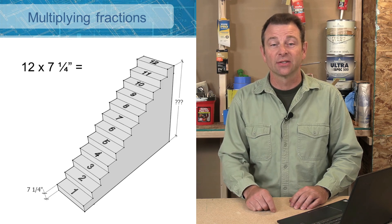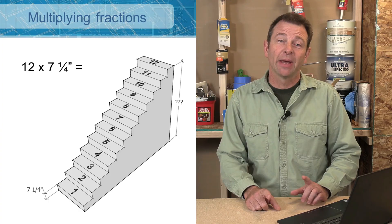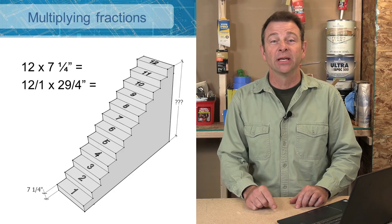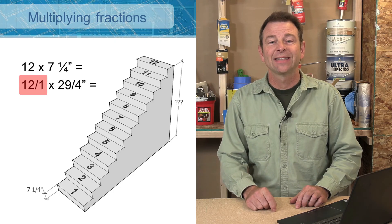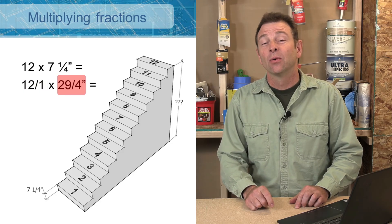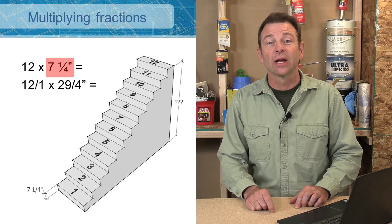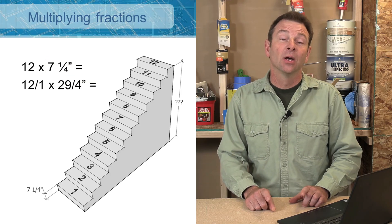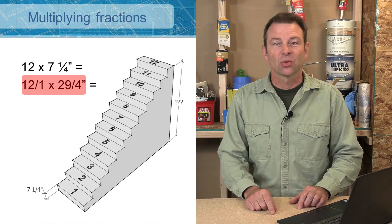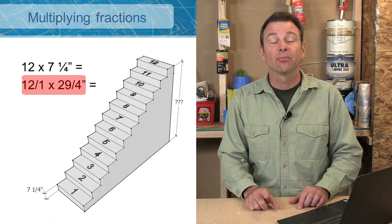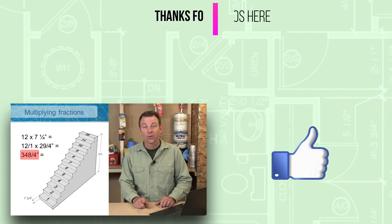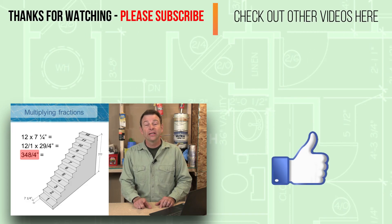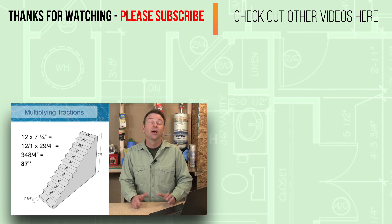We make each number into a fraction: 12 over 1 times 29 over 4. We're taking our 7 and a quarter and converting it to the improper fraction 29 over 4. When we multiply 12 over 1 times 29 over 4, we end up with 348 over 4. All we need to do now is divide 348 by 4, which gives us 87 inches — and that's the overall height of the staircase.